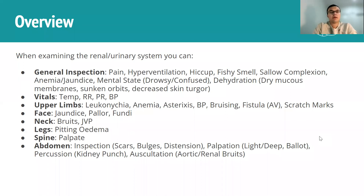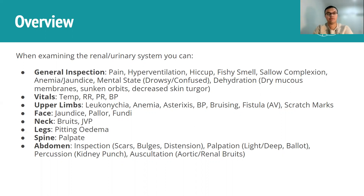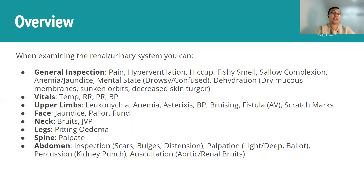When it comes to examining the renal system, we're going to be looking at both the renal and urinary system. As usual, we're going to go through our step-by-step process, starting off with general inspection, looking at the patient as they come in, having a look at their vitals, upper limbs, face, neck, legs, spine, and then coming to the abdomen for closer inspection, palpation, percussion, and auscultation. We'll be talking about all of that in the context of conditions, pathologies, and how you can link certain signs to underlying disease processes.